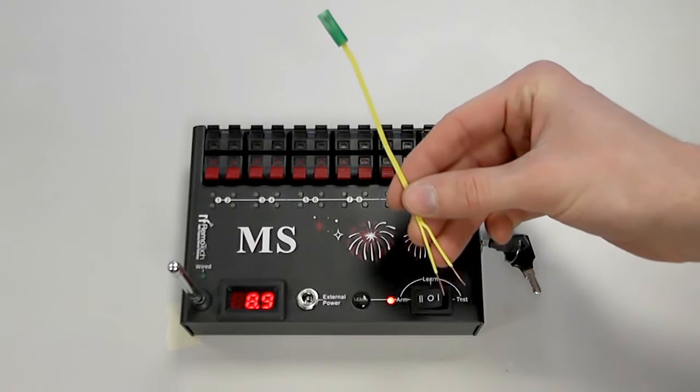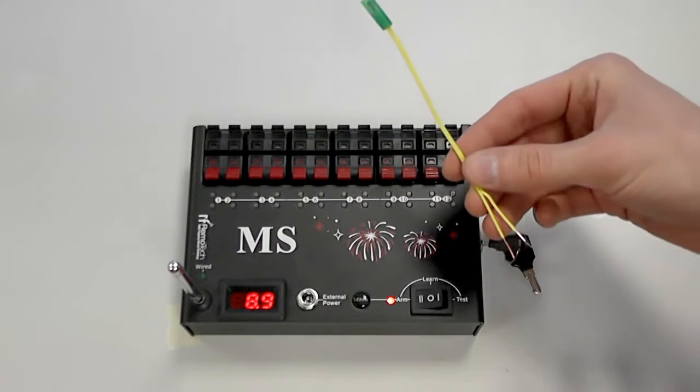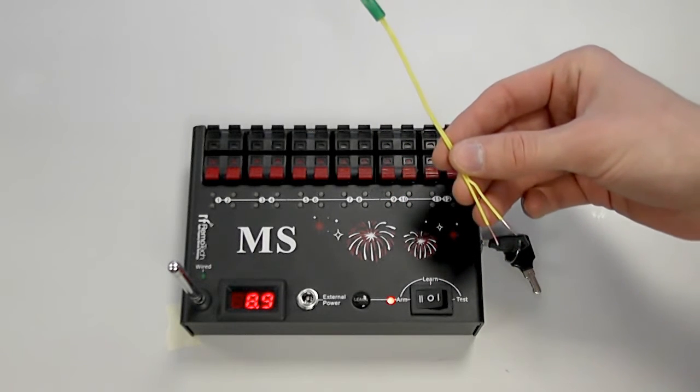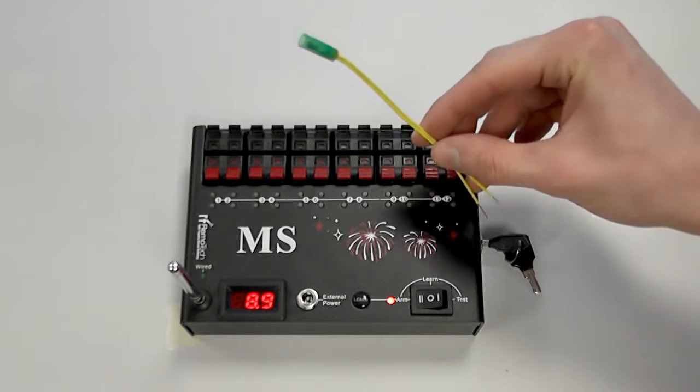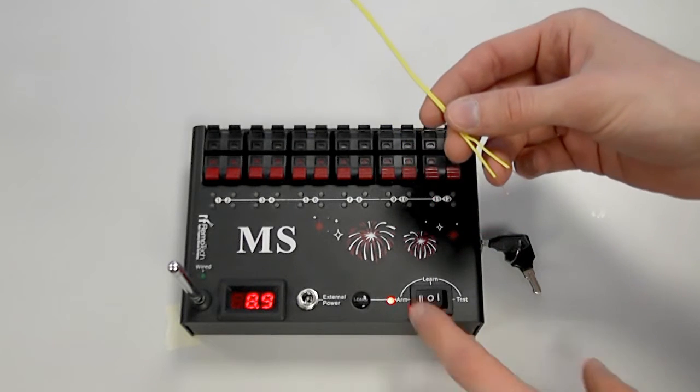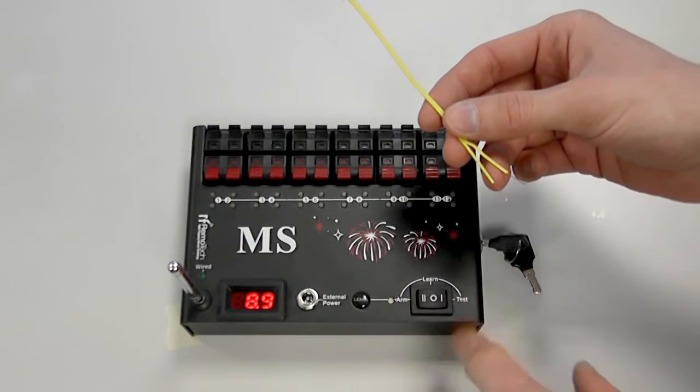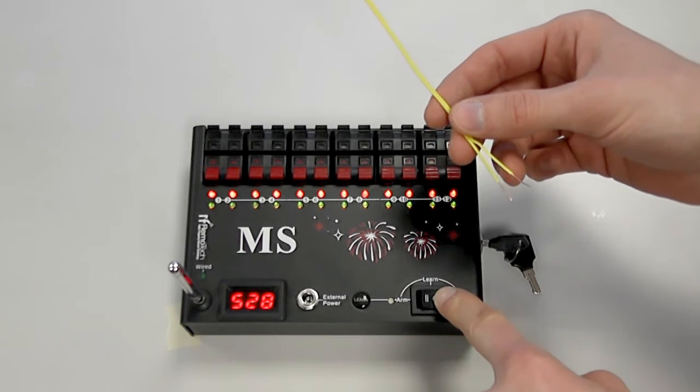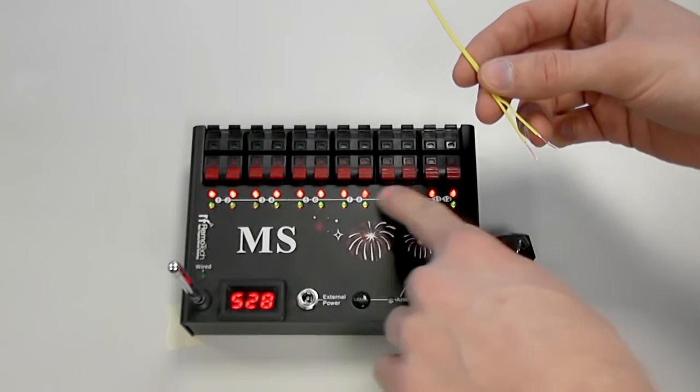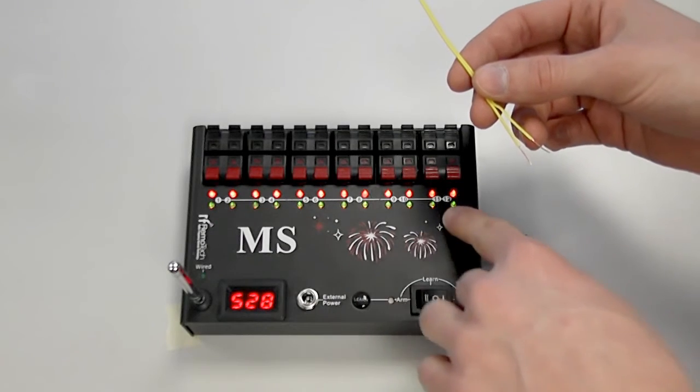Okay so now I'll just show you the test mode that this has and this is the same as pretty much any other firing system. It just allows you to test the continuity of your e-matches before you fire. So we'll take it out of arm mode and put the rocker switch to the right hand side which is test mode.